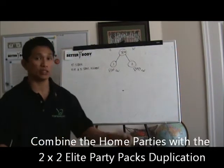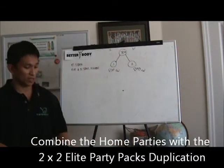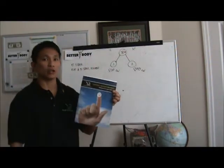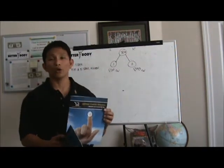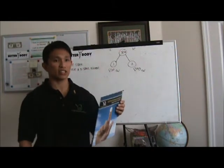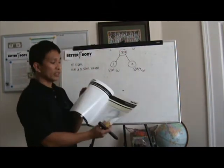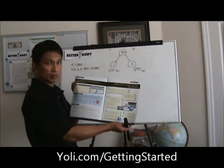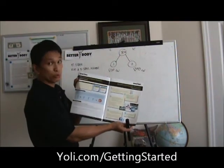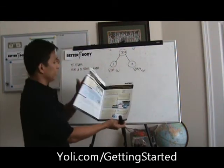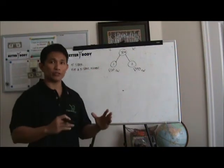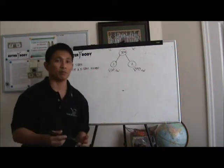If you want to learn more about this, you can go to the blueprint or the Getting Started training. Go to yoli.com/gettingstarted and you can read everything about the company, instructions, and how you can have a successful simple system about duplication through home parties. What I'm teaching you right now is how to build your network.